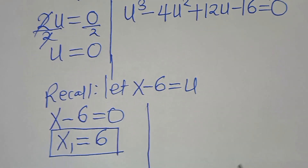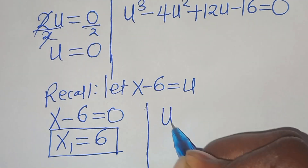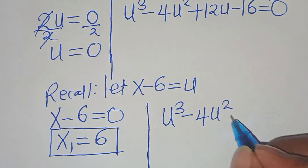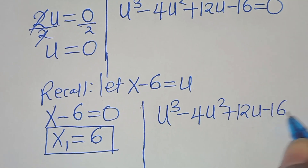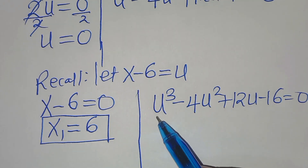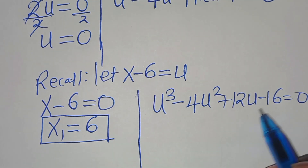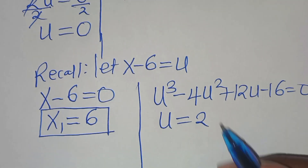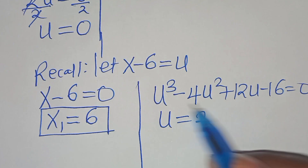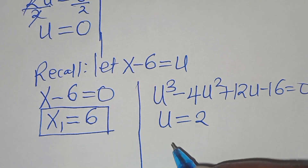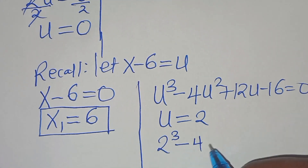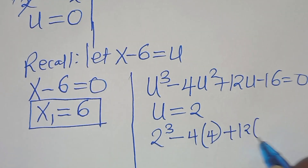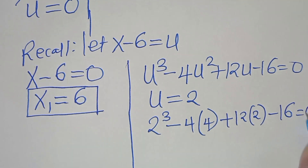The second part gives us a cubic polynomial of degree 3: u to the power of 3, minus 4u squared, plus 12u, minus 16, equal to 0. To solve this cubic, we apply the rational root theorem and check u equal to 2. Plugging in: 2 to the power of 3, minus 4 times 2 squared, plus 12 times 2, minus 16.